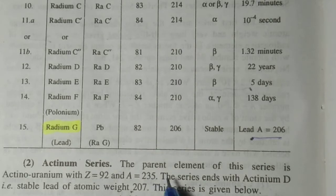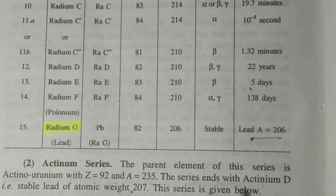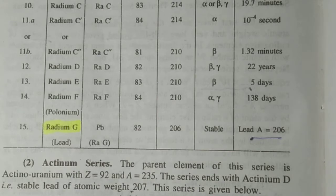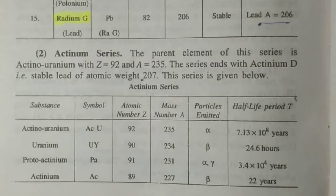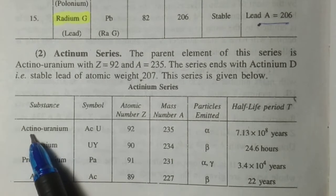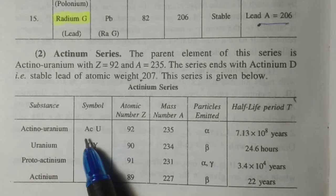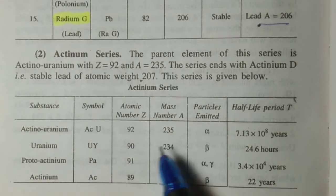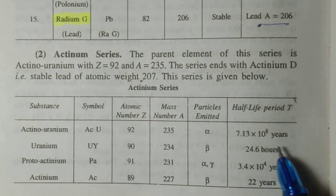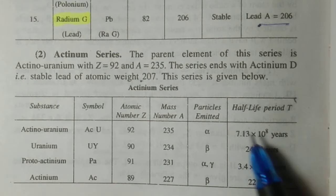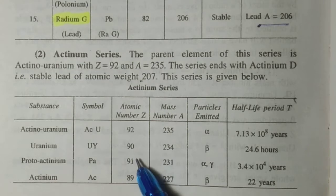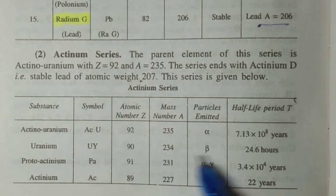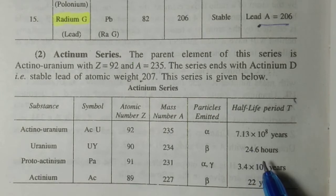Now actinium series — the parent element of this series is actino-uranium with Z equal to 92 and mass number 235. It emits alpha particles and has a half-life of 7.13 into 10 power 8 years. Then it emits a beta particle, producing a new isotope with atomic number 90, mass number 231, and half-life 24.6 hours, and so on.